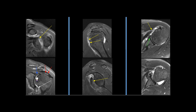There is a SLAP tear of the superior labrum extending into the biceps labral anchor. There is focal degeneration of the anterior labrum seen at the equator. The anterior inferior labrum is intact. There is humeral avulsion of the anterior band of the inferior glenohumeral ligament.